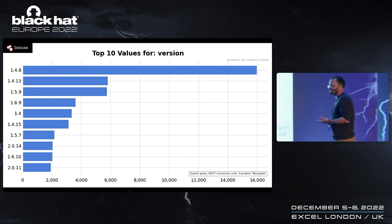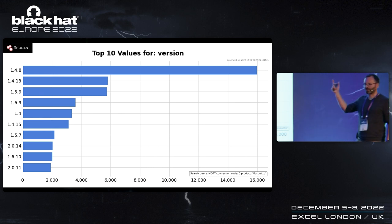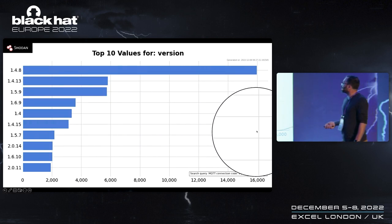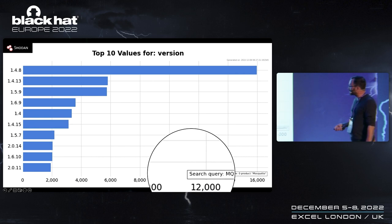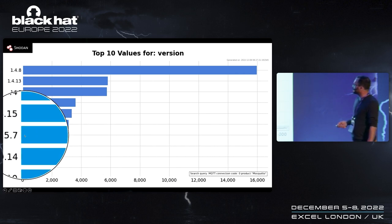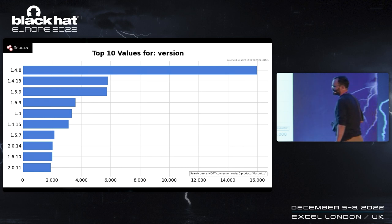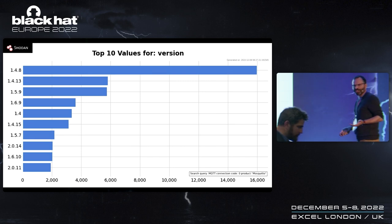Running a Shodan query on the most prevalent MQTT versions — this is really fresh data — you can still see version 1.4.8, which is full of vulnerabilities, sitting on top. More interestingly, these are servers openly available on the internet with no authentication, and you can see even version 2.0 servers among them. The reason is that inherited configurations sometimes break upgrades, so people just re-enable anonymous access.